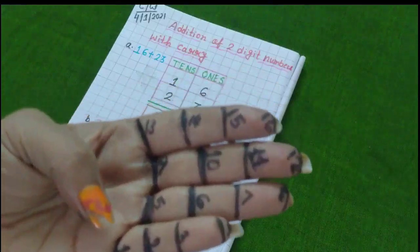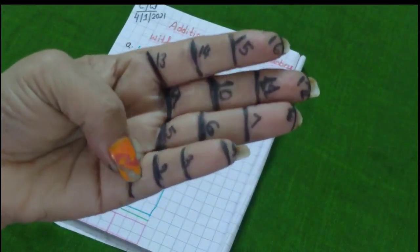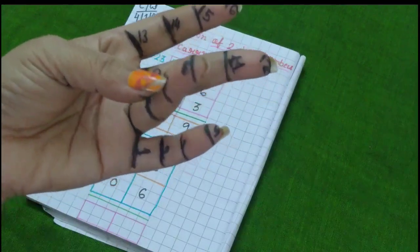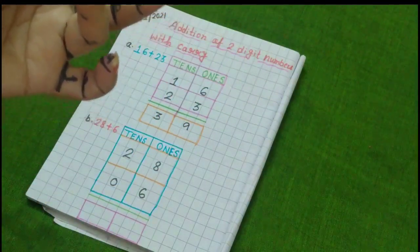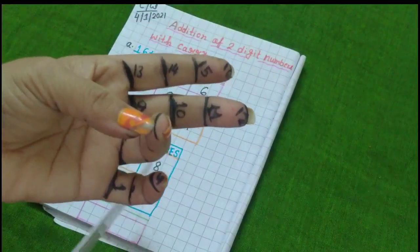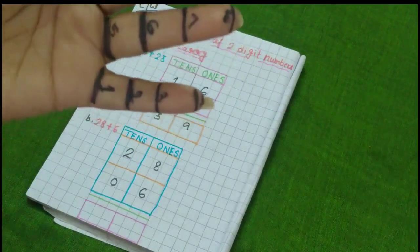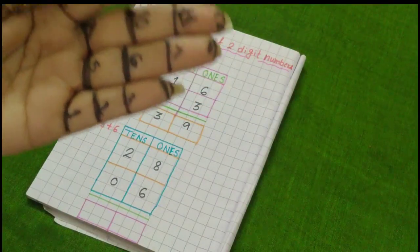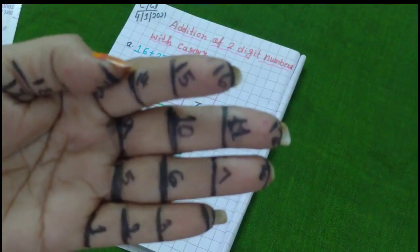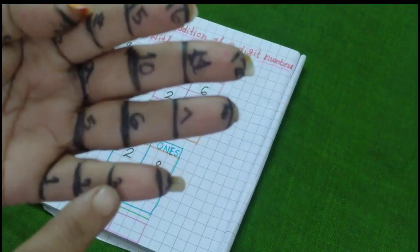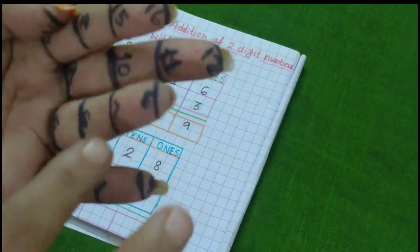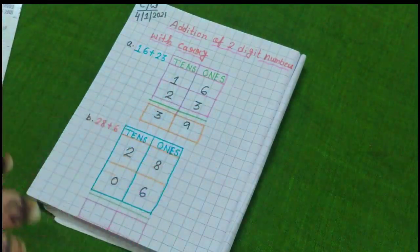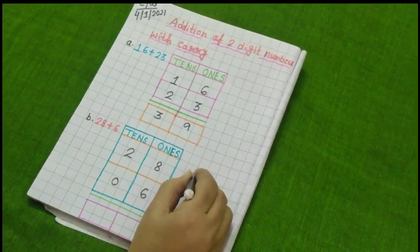First, I will count 8 finger marks. 1, 2, 3, 4, 5, 6, 7, 8. Then, I have to count 6 more finger marks. 1, 2, 3, 4, 5, 6. So, how many finger marks have I reached? Let's count 1, 2, 3, 4, 5, 6, 7, 8, 9, 10, 11, 12, 13, 14. 14, okay? So, I am writing here 14.